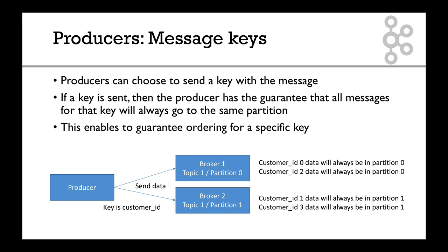So remember how I said to you that messages were sent randomly to a partition except when there was a key. That's when you learn about that key. The message of the data could be anything you want, really anything you want. And you can choose to send a key with that message. If that key is sent, then the producer has a guarantee that all the messages which share the same key will always go to the same partition. And that guarantees ordering for a specific key.